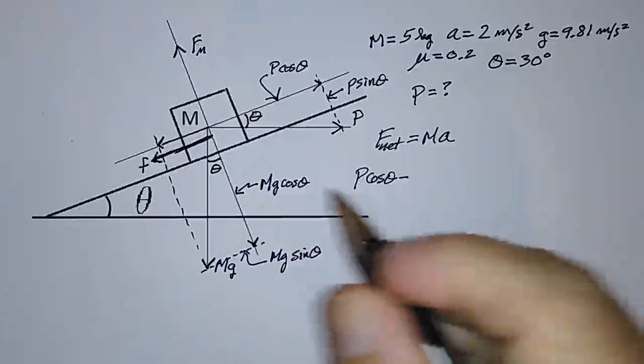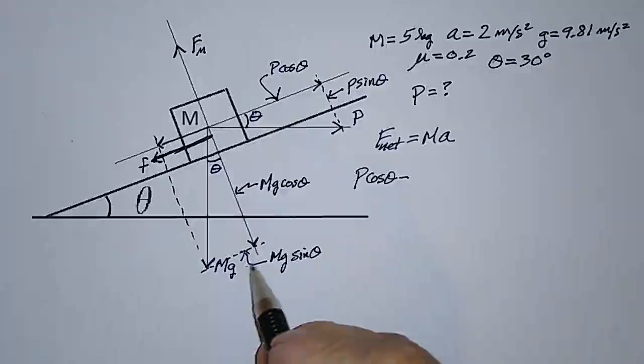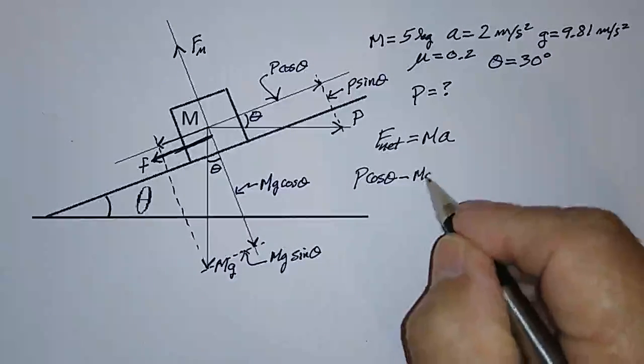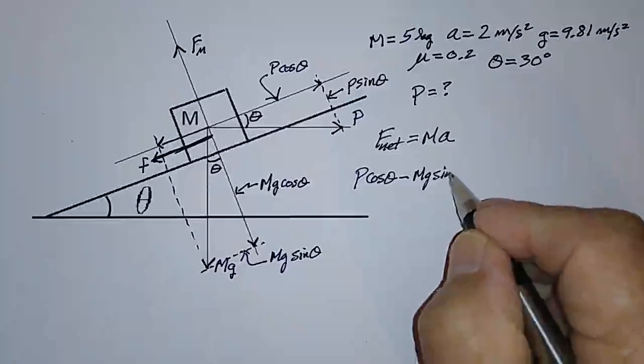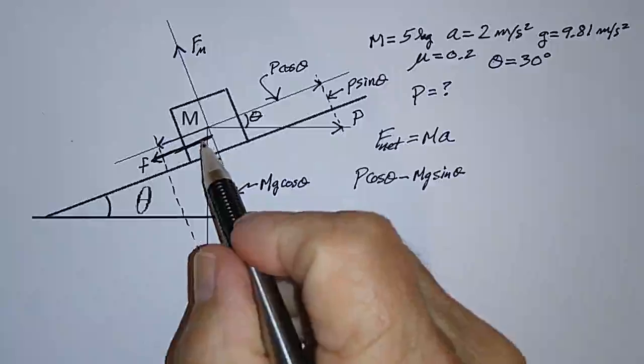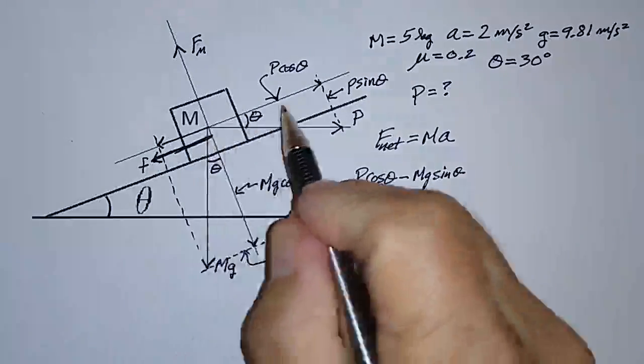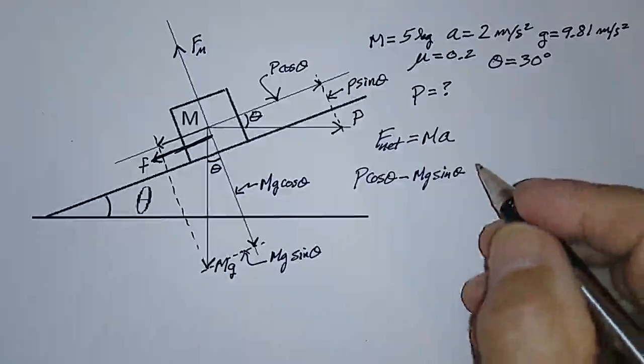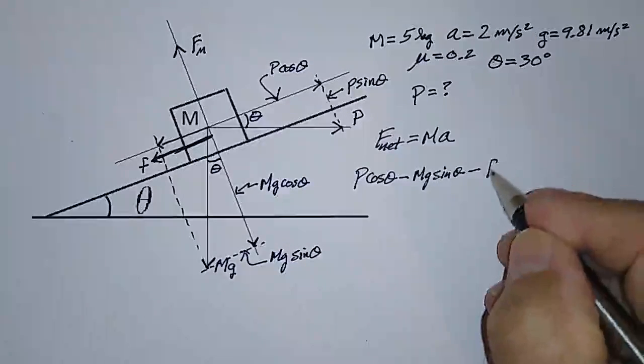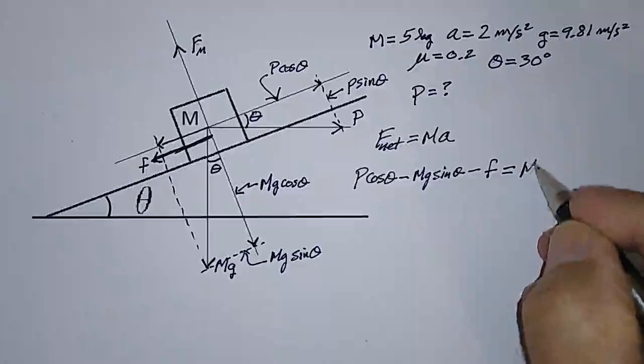minus the forces that are causing it to want to go down the plane. Well, there's a component due to gravity, which is M G sine theta. And there's also the frictional force that's trying to make it go down the plane, or rather resisting the motion going up the plane. So minus the frictional force, and this is equal to M A.